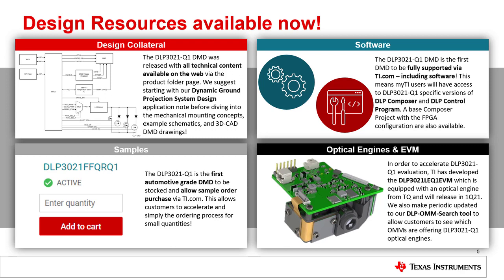However, we have developed the DLP 3021-LEQ1 EVM, which contains an optical engine to help remove this barrier. This EVM will release to TI.com in the first quarter of 2021. We also periodically update the DLP OMM search tool, which contains a list of off-the-shelf DLP 3021-Q1 optical engines produced by DLP Automotive Ecosystem Partners. This is also a great way to reach out to optical module makers, or OMMs, to inquire about custom designs and volume quantities. We are really excited about all of the design resources available on TI.com and believe every document will help system designers create new and exciting DGP systems with the DLP 3021-Q1 DMD.